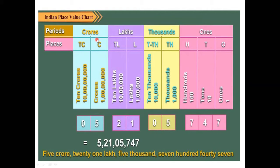For a 9-digit number in the Hindu Arabic system, we have 4 periods. The 4 periods are: crores, lakhs, thousands, and ones. We differentiate each period using a comma. An example number is 5,21,57,847 — read as 5 crore 21 lakh 57 thousand 847.